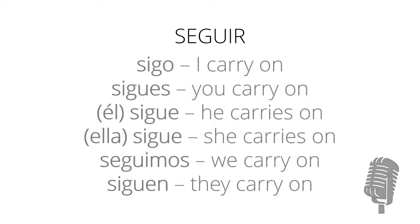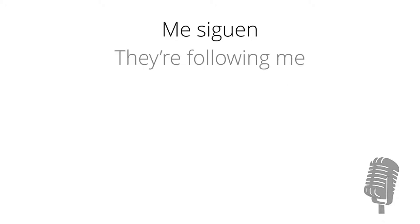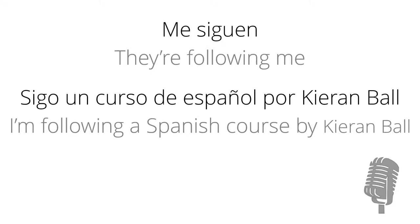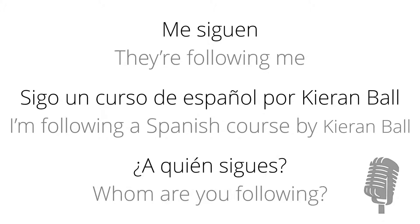So by itself, 'seguir' means 'to follow'. For example, 'me siguen' means 'they're following me'. Or you could say 'sigo un curso de español' — 'I'm following a Spanish course'. Or you could ask 'a quién sigues?' — 'who are you following?' Whereas if you put a present participle on the end of any form of 'seguir', it means to carry on doing something or to continue doing something. In English, you can also use it to show that you're still doing something, and then you don't need to use the word for 'still' in Spanish.